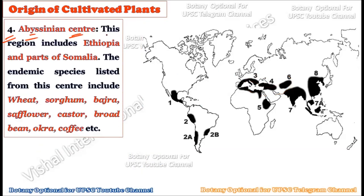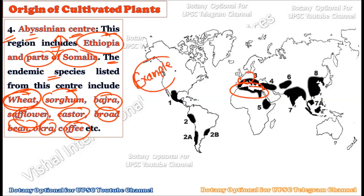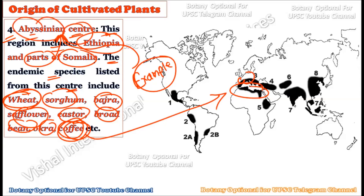The fourth center is the Abyssinian center of origin, which includes parts of Ethiopia and Somalia. The endemic plant species from this center include wheat, sorghum, bajra, safflower, castor, broad beans, okra, and coffee. Coffee is a very specific and famous example that originated in the Abyssinian center of origin, making it an important example to mention when describing this center.